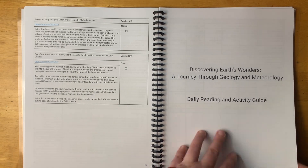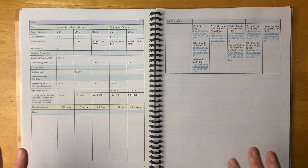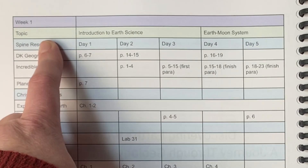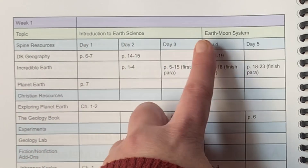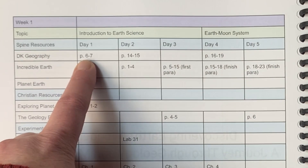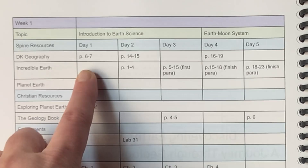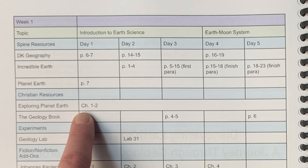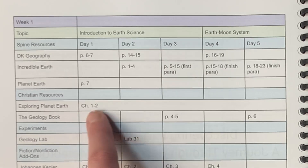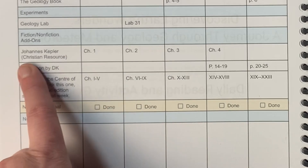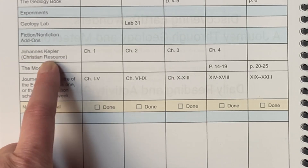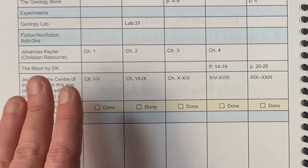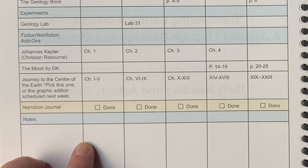Here's what a week looks like — week one is a little shorter. We have our topics listed here. The first three days cover Introduction to Earth Science and then we move into the Earth and Moon System. I specify how many pages to read: two pages in the DK Geography book, one page in Planet Earth, chapters one to two in Exploring Planet Earth. And then we have Johann Kepler, which is a Christian resource — reading chapter one of that if you want a living book about a scientist related to Earth Science.